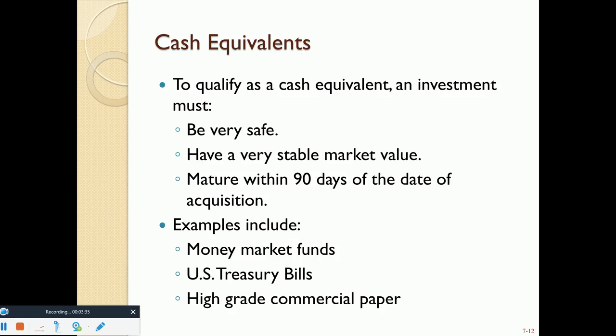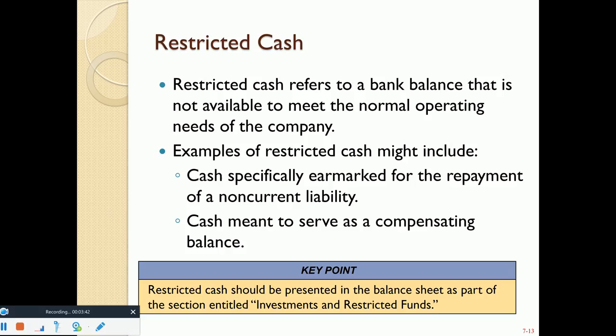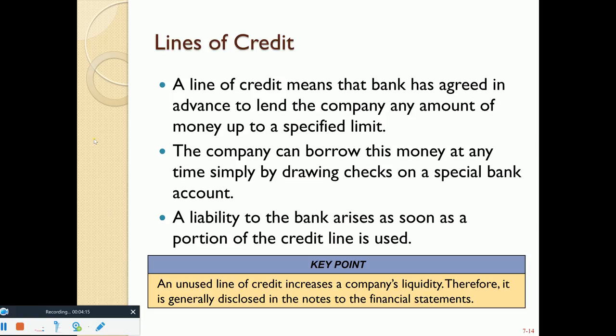Sometimes an organization has restricted cash, meaning a lender requires them to set aside cash for a specific purpose—such as repayment of a liability. In that case, operating cash and restricted cash are separated on the balance sheet. A line of credit means the bank has agreed to advance money up to a limit if needed. If we don't draw on it, there's no liability; as we draw on it, we record a liability.